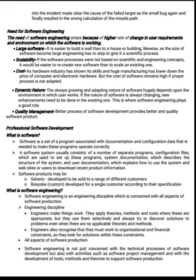What is Software Engineering? Software Engineering is an engineering discipline which is concerned with all aspects of software production. Engineers make things work; they apply theories, methods, and tools where appropriate, but they use them selectively and always try to discover solutions to problems even when there are no applicable theories and methods. Engineers also recognize that they must work within organizational and financial constraints, so they look for solutions within these constraints. Software engineering is not just concerned with the technical processes of software development, but also with activities such as software project management and with the development of tools, methods, and theories to support software production.